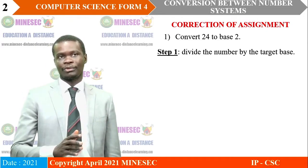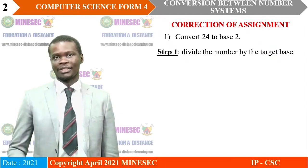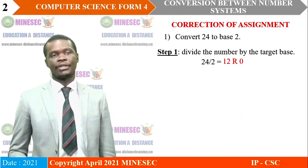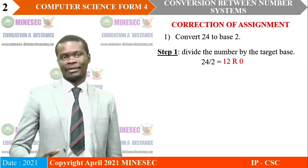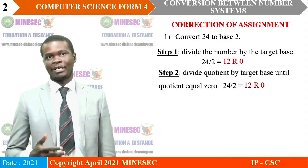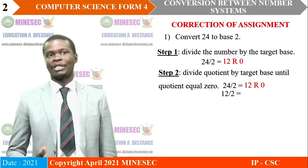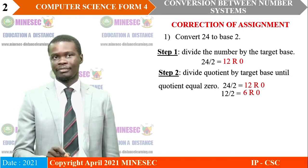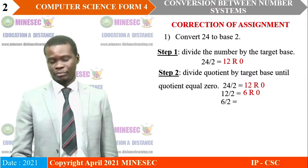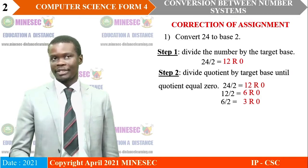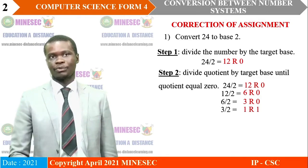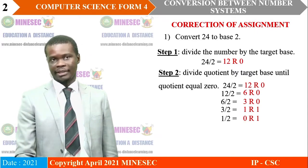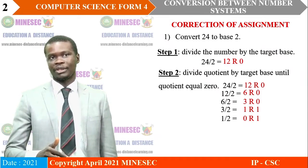We are about to convert 24 to base 2, so the base here is 2. We divide 24 by 2; the answer is 12 remainder 0. Then we divide the quotient by 2: 12 divided by 2 gives 6 remainder 0. Is the quotient 0? 6 is not 0, so we divide. 6 divided by 2 gives 3 remainder 0. 3 is not 0, so we keep on dividing. 3 divided by 2 gives 1 remainder 1. The quotient is not yet 0, so we keep dividing. 1 divided by 2 gives 0 remainder 1. This time the quotient is 0, so we stop dividing.